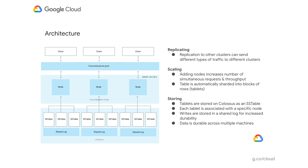If you look at the architecture of Cloud Bigtable, you'll see a lot of similarities. For replicating data, replication to other clusters can send different types of traffic to different clusters. We have a way to set up policies through a thing called app profiles that handle how failover happens and how you want to route your reads and writes on the system. Scaling is very simple — it's as simple as adding or removing nodes within the UI or command line interface. A table is automatically sharded into blocks of rows called tablets, and this is all managed behind the scenes using heuristics around total data size and traffic. The storage system automatically scales as well, with data stored encrypted at rest on disk. Even if you're only running a single node, your data is durable across multiple machines.